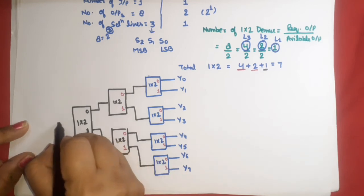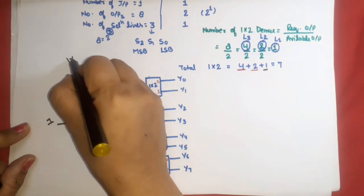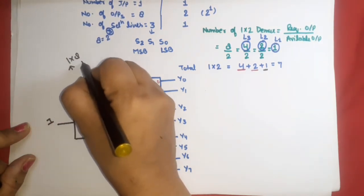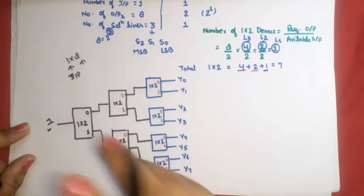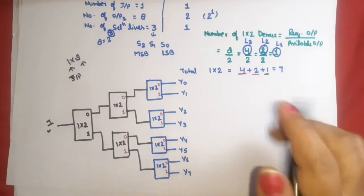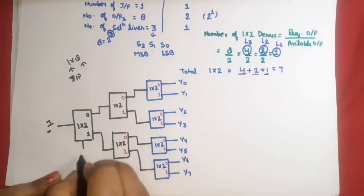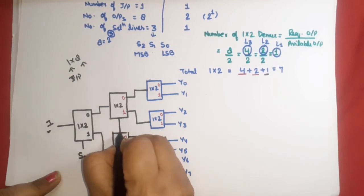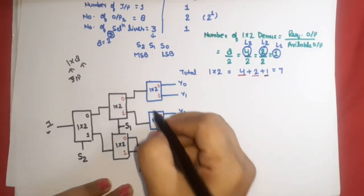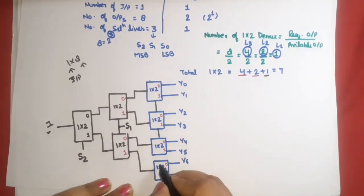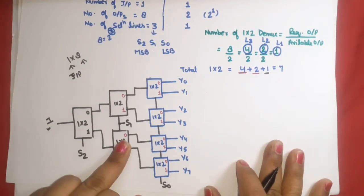At level 1, we need 1 more demux. This 1-to-2 demux has outputs 0 and 1. Output 0 works as input for the first level-2 demux, and output 1 works as input for the second level-2 demux. The single input of this level-1 demux is the input for the entire 1-to-8 demultiplexer — 1 input and 8 outputs. The selection lines are S2, S1, S0. S2 is connected to the MSB position at level 1, S1 is connected at level 2, and S0 is the common selection line for all level-3 demuxes.